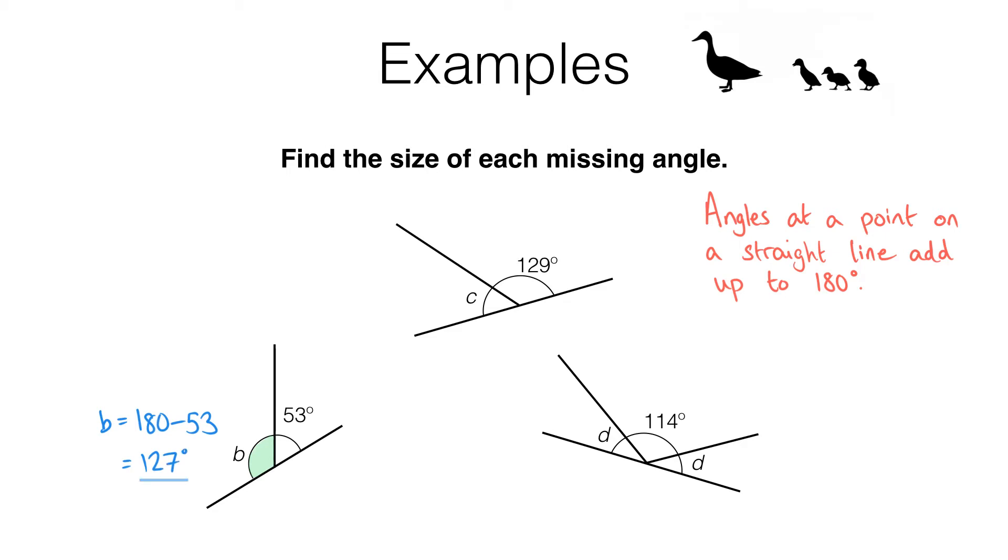Pause the video and see if you can find the size of angle C. What you should have spotted is that these two angles meet at a point on a straight line. So they add up to 180. That means C is going to be 180 minus 129 and that gives us an answer of 61 degrees.